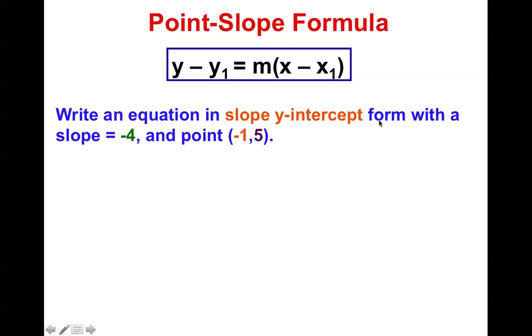All right. But what if I wanted in slope y-intercept form? Well, once again, I know the slope and I know my x1 and y1. There is x1 and there is y1. So the x1 becomes 1. The y1 becomes 5.